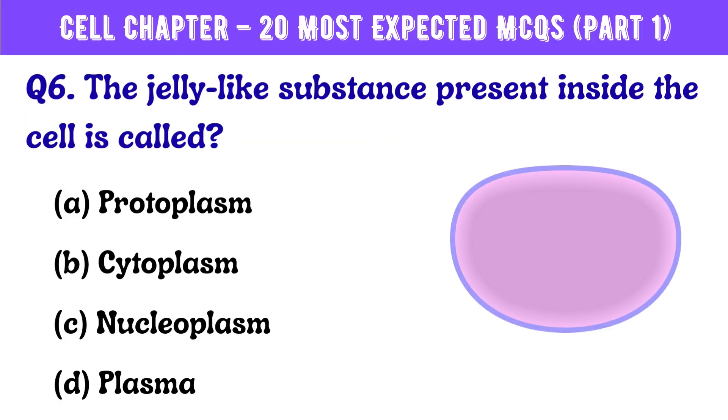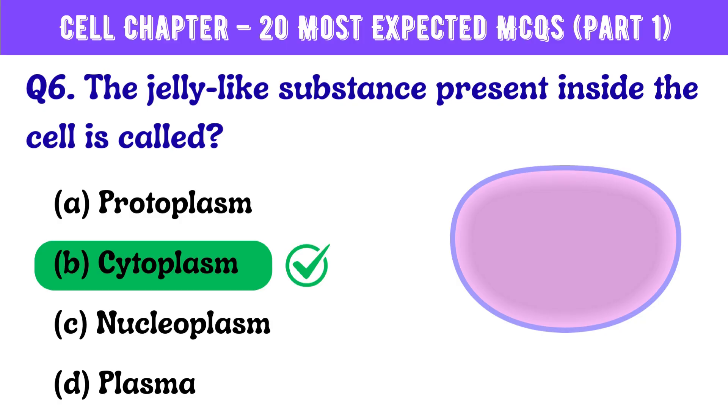Question number 6. The jelly-like substance present inside the cell is called? Correct answer is option B: Cytoplasm.